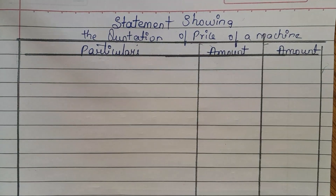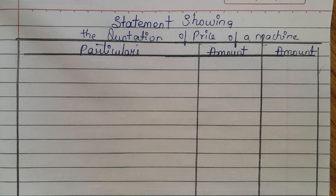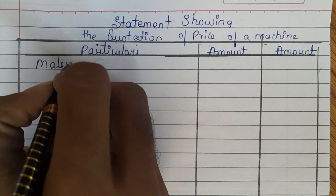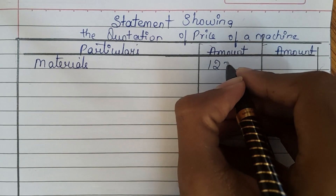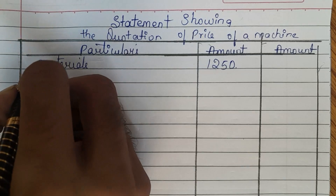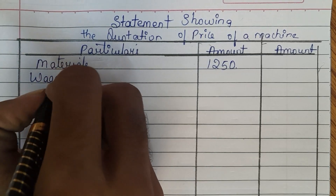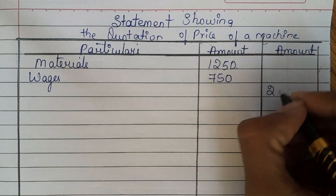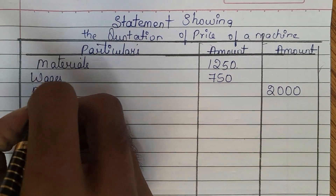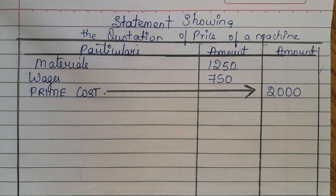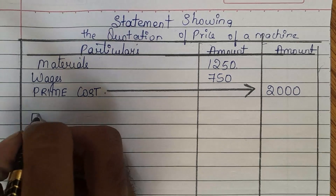First, from the question: required materials are valued at Rs. 1,250 and expenditure on productive wages is Rs. 750. Add 1,250 and 750 to get 2,000. This 2,000 is the prime cost. To this we need to add factory overhead.